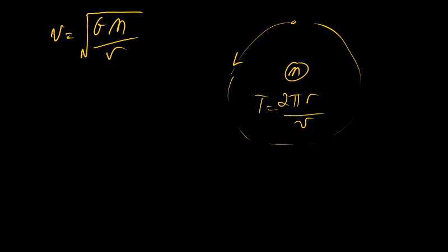With the Earth, we have a distance of 1.5 times 10 to the 11 meters. This is the distance here between the Earth and the Sun. And we know that it takes 365 days for the Earth to go around, and we can convert that to seconds. We get about 3.2 times 10 to the 7 seconds.